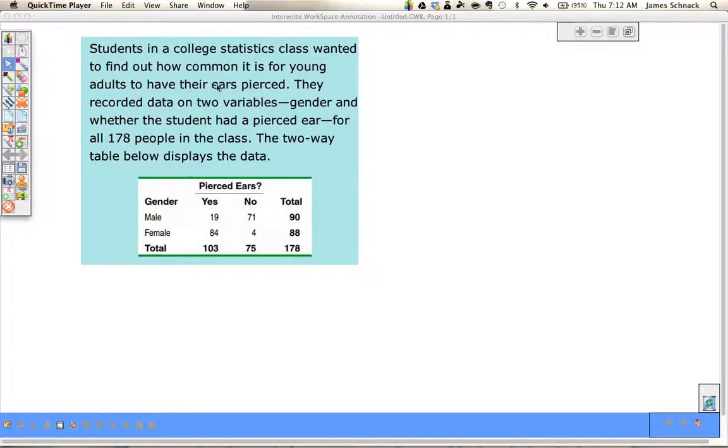Students in a college wanted to find out how common it is for young adults to have their ears pierced. So we have two variables: gender, and whether or not a student has a pierced ear. We can arrange the data in a two-way table. The rows represent the gender, and the columns represent the pierced ears.